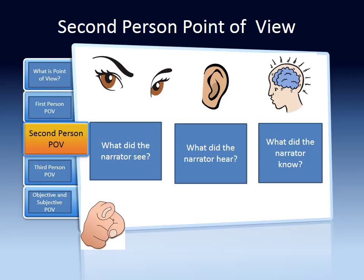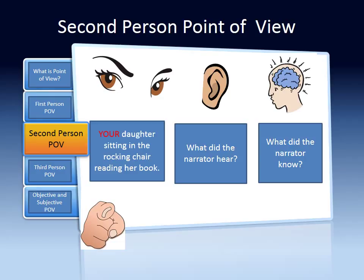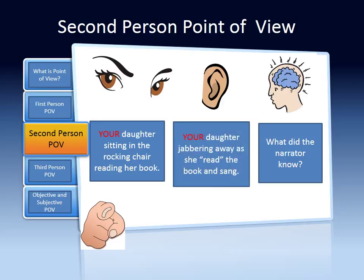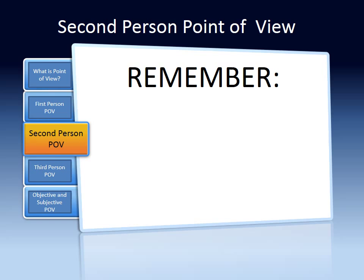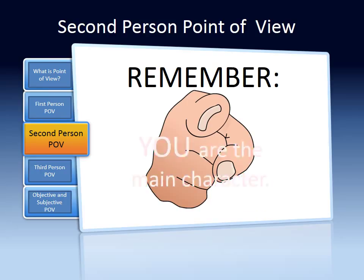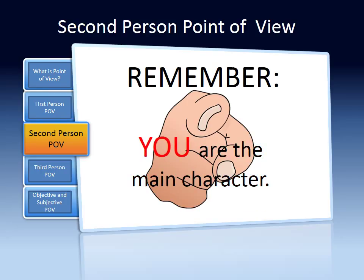Let's think about what the narrator saw. The narrator saw your daughter sitting in the rocking chair reading her book. What did the narrator hear? The narrator heard your daughter jabbering away as she read the book and sang. What did the narrator know? The narrator knew that you think that your daughter has a sweet angelic voice, is beautiful and intelligent. Remember, in second-person point of view, you are the main character.